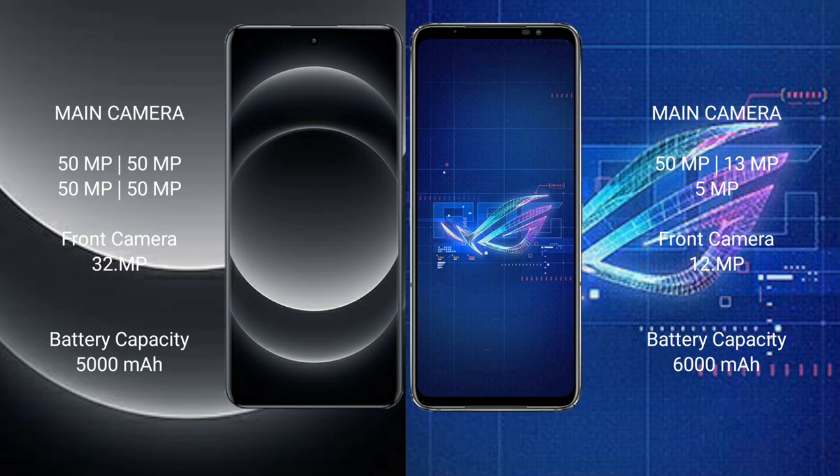Xiaomi 14 Ultra has a 5000mAh battery with 90W fast charging support. Asus ROG Phone 6 has a 6000mAh battery with 65W fast charging support.